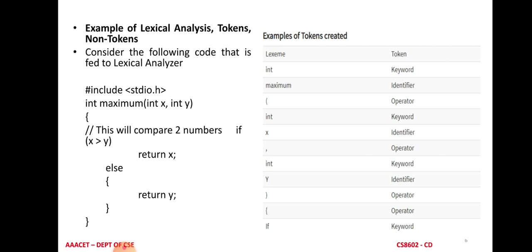Consider this example program. The first line is a hash include header file. The second line is a function with name 'maximum' and two parameters x and y. It compares the values: if x is greater than y, the value of x is returned, otherwise the value of y is returned. For this program we identify the tokens and non-tokens by first writing the lexeme values: int, maximum, open bracket, int, x, comma, int, y, close bracket, and so on.